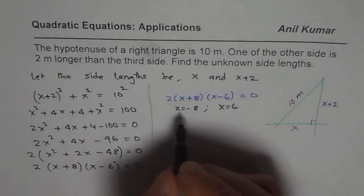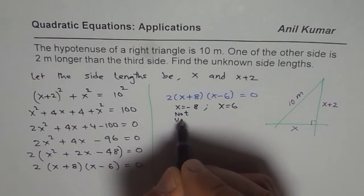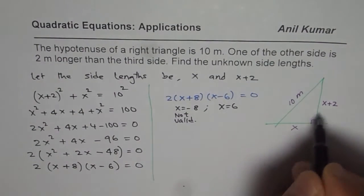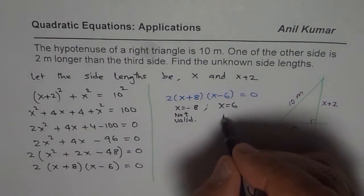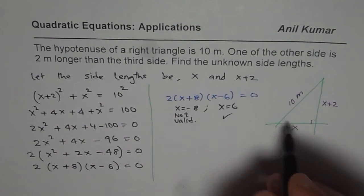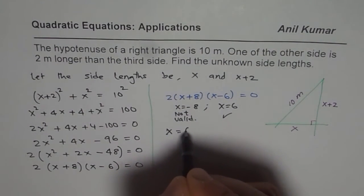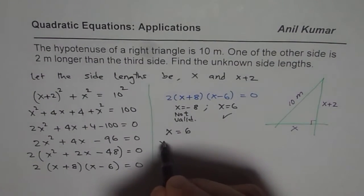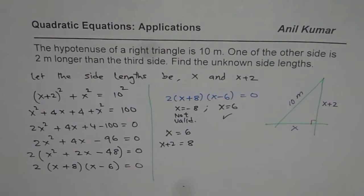x = −8 is not valid, since the sides of a triangle cannot be negative. So x = 6 is the valid solution. The other side is x + 2, which equals 8. So we get the two side lengths.